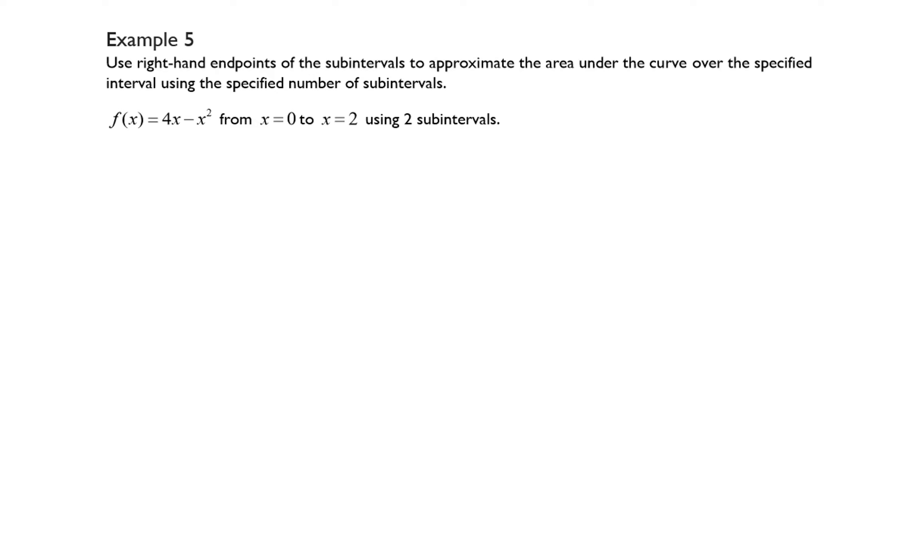So I often think it's helpful to sketch a quick graph of our function and 4x minus x squared is a quadratic function. If you factor out the x and set it equal to 0, you end up getting that the zeros or the roots of this function are at x equals 0 and x equals 4.